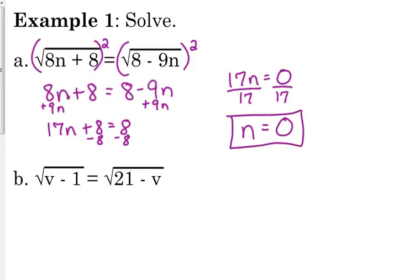You can check it really easy before I get back in. If n is 0, we get the square root of 8 on the left side. If n is 0, we get the square root of 8 on the right side. So, easy enough, right?